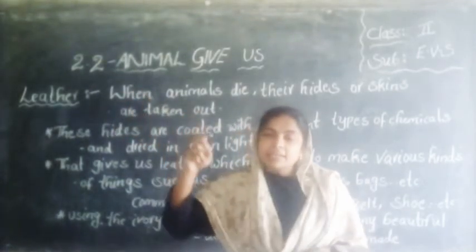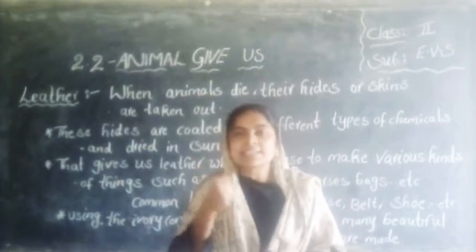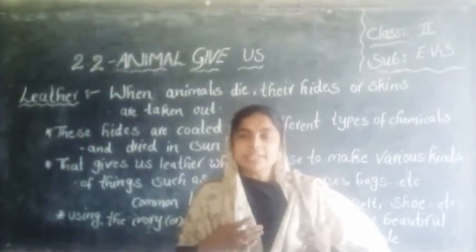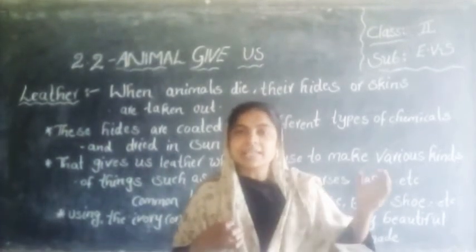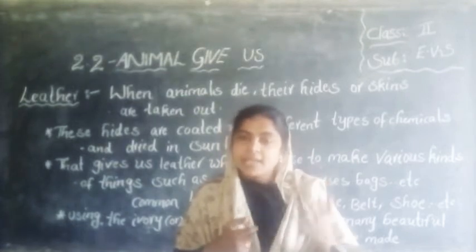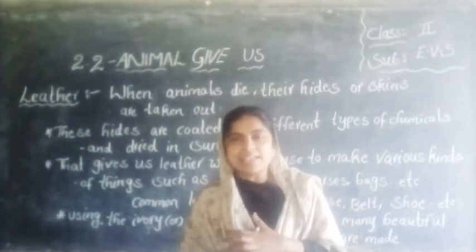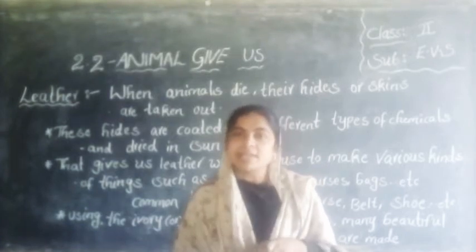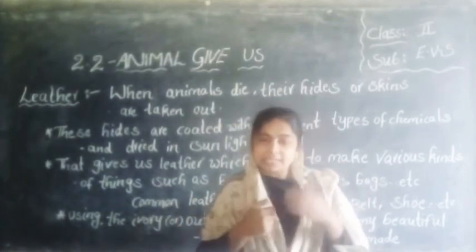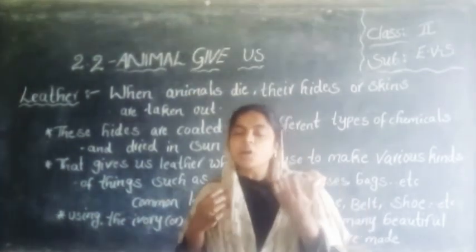Leather — when animals die, their hides or animal skins are taken out. These hides are coated with different types of chemicals and dried in sunlight. That gives us leather, which we use to make different types of things, such as belts, shoes, and bags. Using the ivory, or outer teeth of elephants, many beautiful articles are made.